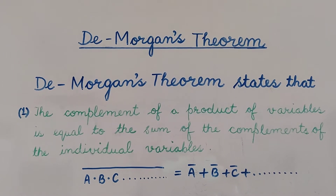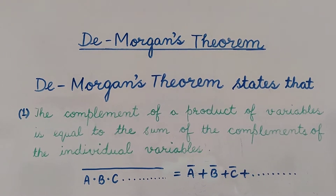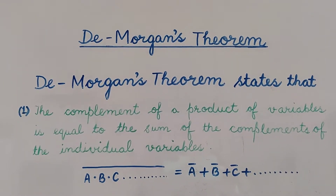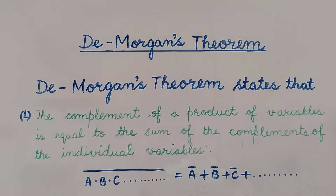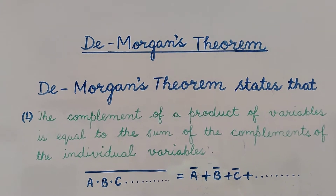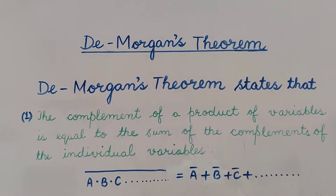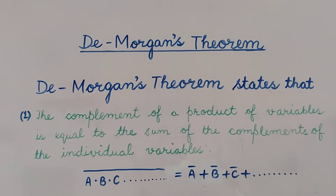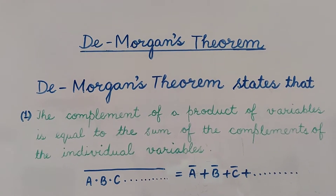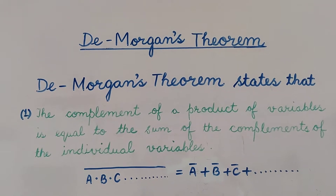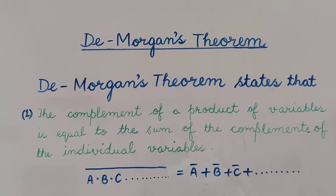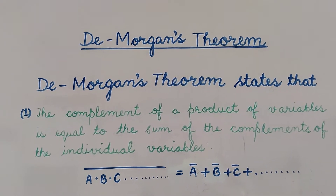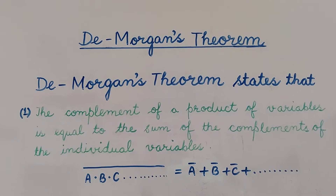Today we will discuss a very important theorem which is used in digital electronics, known as De Morgan's theorem. It is a very powerful tool in digital design, mainly used to solve various Boolean algebraic expressions.